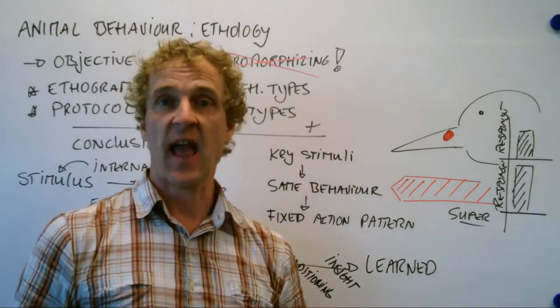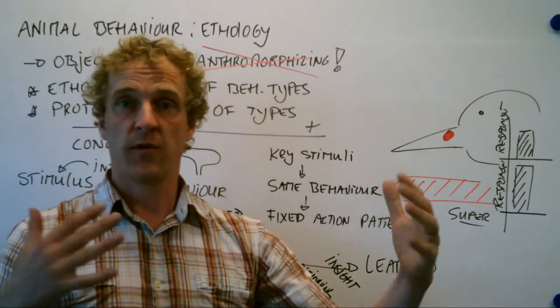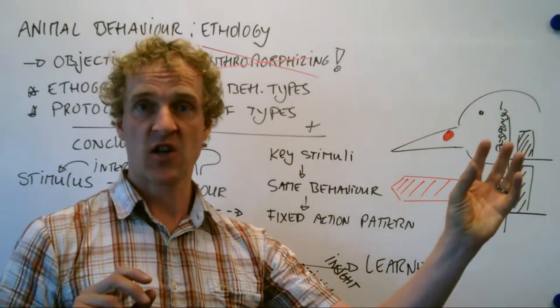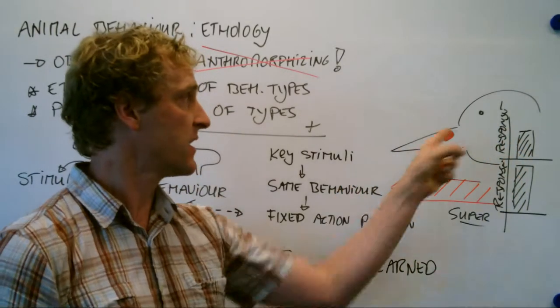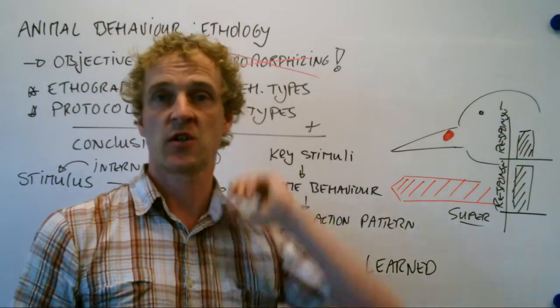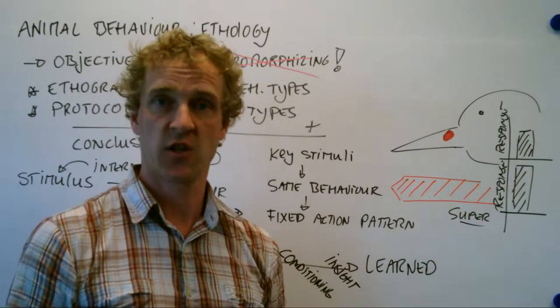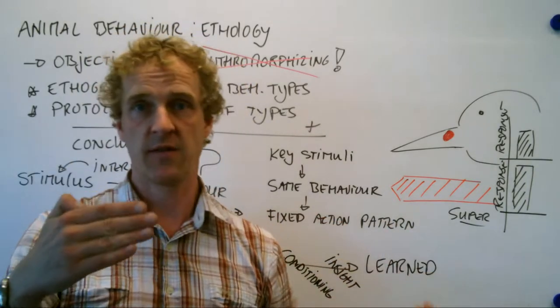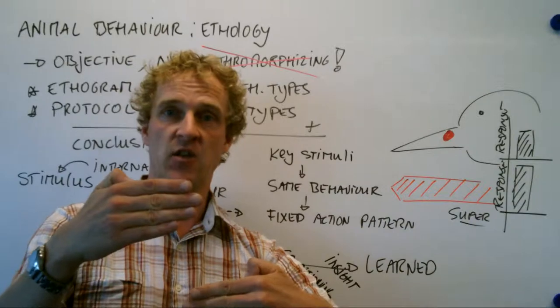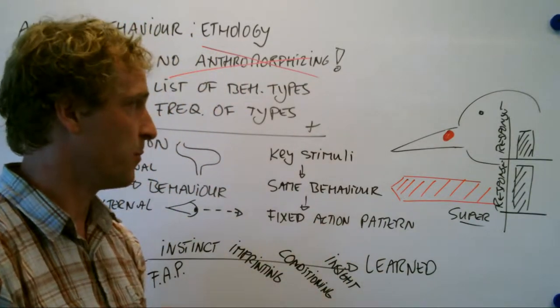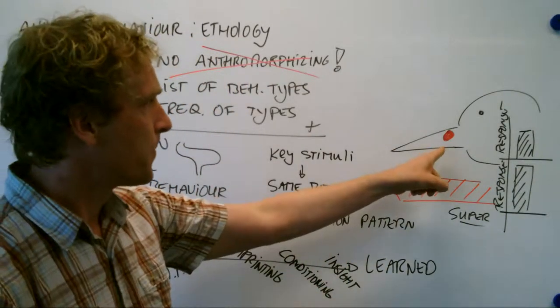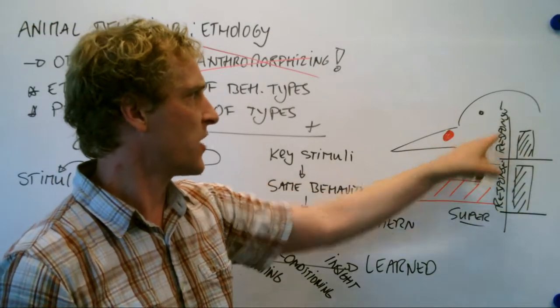And this can lead to a fixed action pattern on both sides. Red spot is sighted. Chicks peck at it. What does the bird do? It starts regurgitating food for the chicks. So you see that one behavior type is a stimulus for the next. And that's a fixed action pattern.